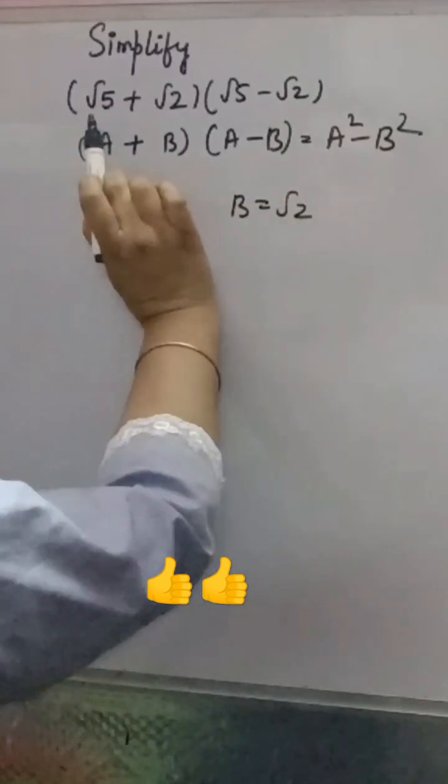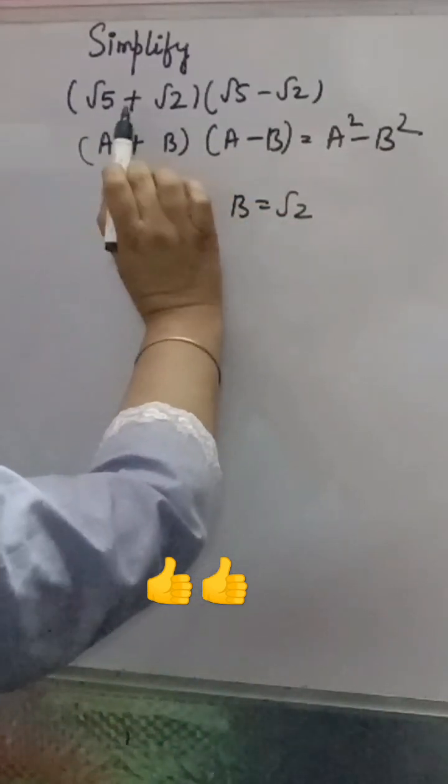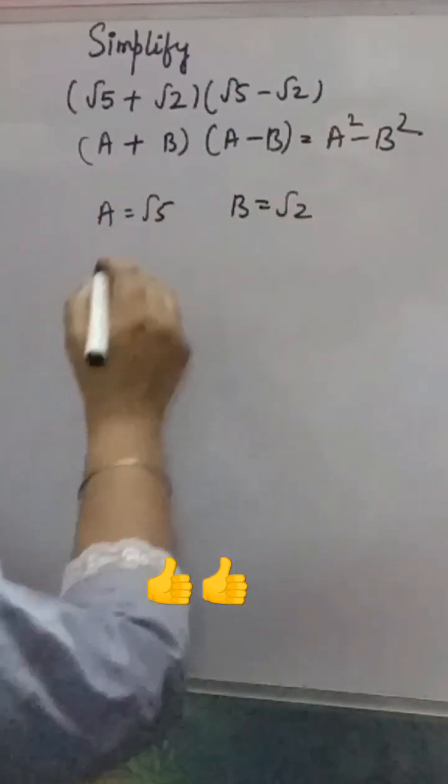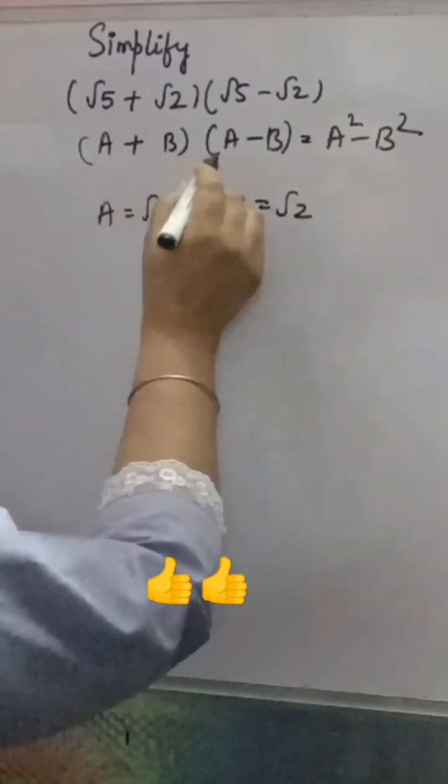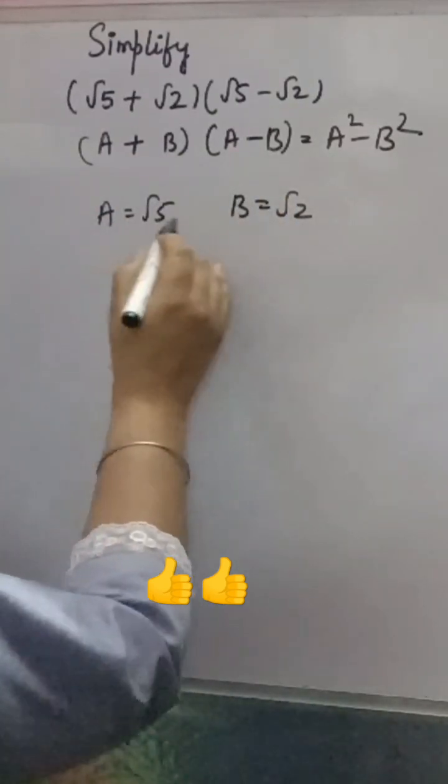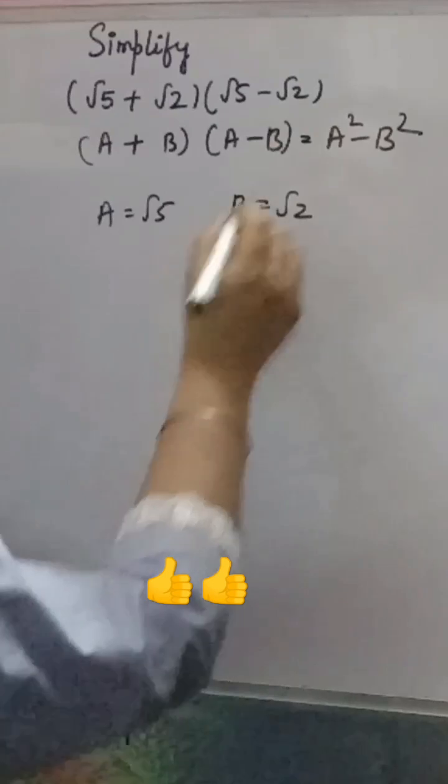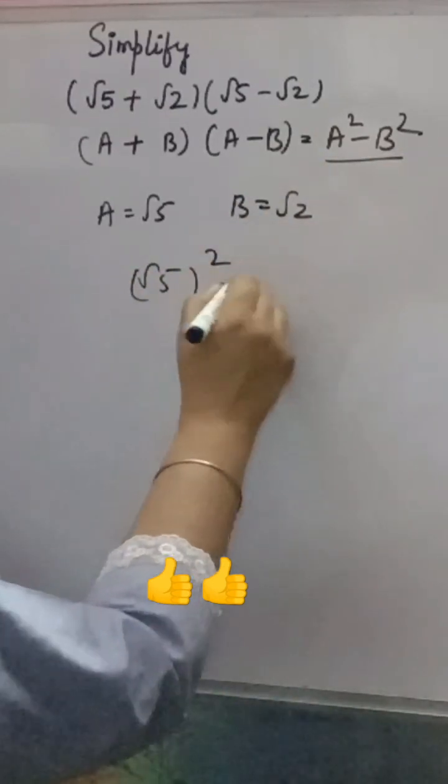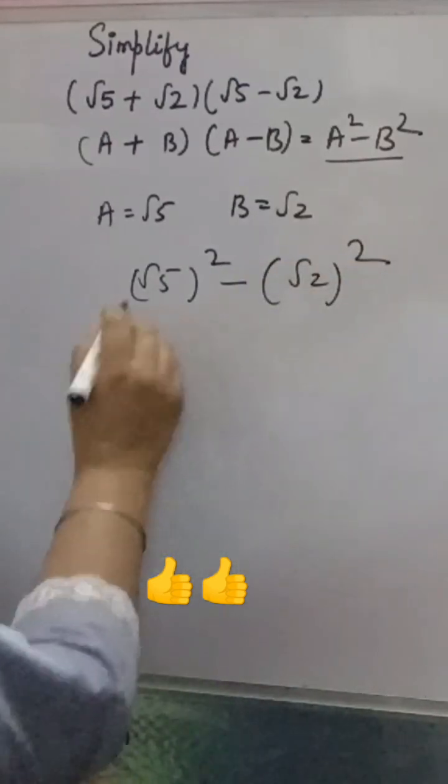If two numbers are there with plus sign and minus sign, both are same in plus and minus, then you can use this formula. Now A plus B into A minus B means root 5 plus root 2 into root 5 minus root 2 will be A square, means root 5 square minus B square means root 2 square.